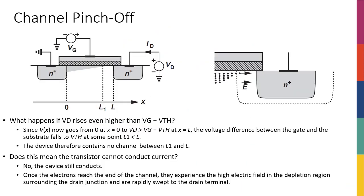What happens if I increase VD even further? With Vg still at 2 volts and threshold at 0.5, if I increase VD to 1.8 volts, the pinch-off point actually moves from the drain to some intermediate point, say at length L1. So the channel becomes shorter and shorter. The critical voltage of 1.5 volts is reached at some point before the drain, and beyond that point there is no channel.